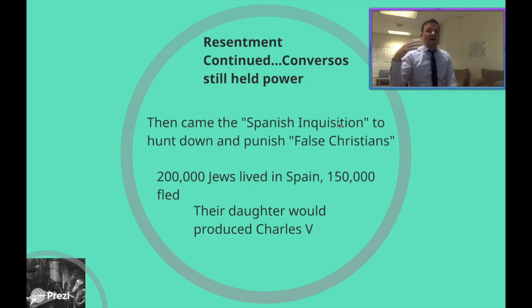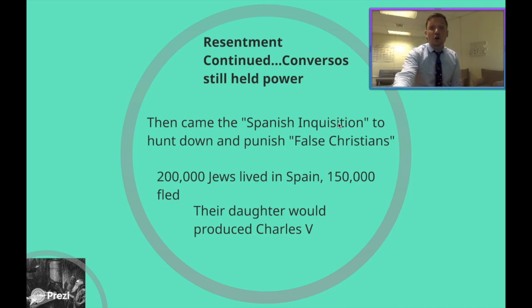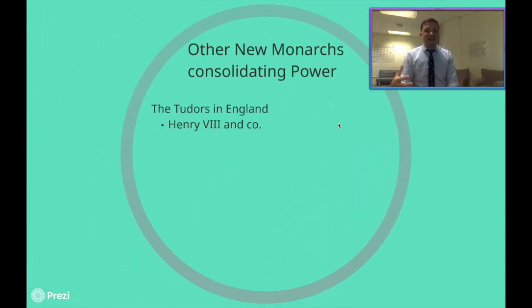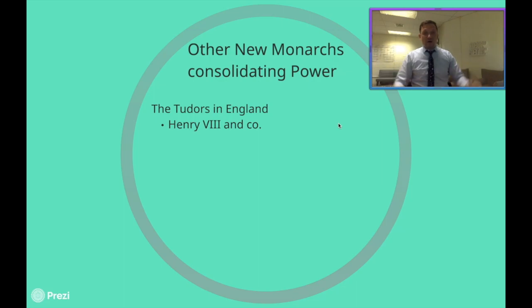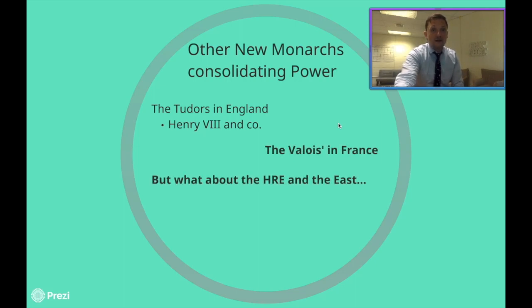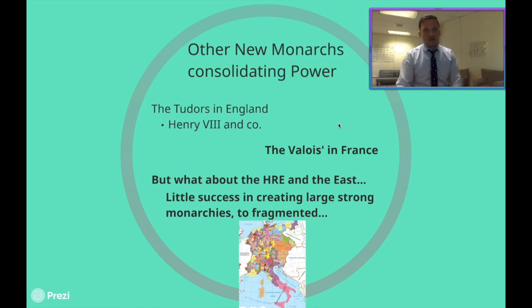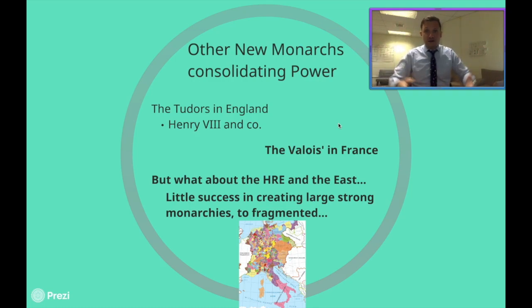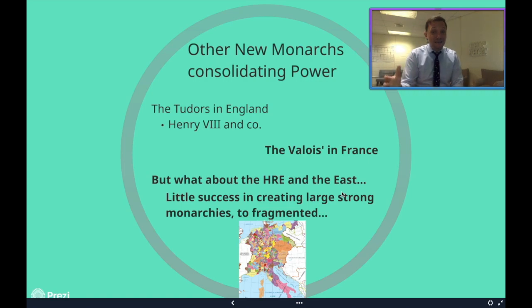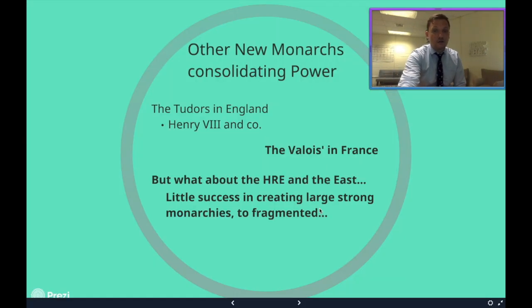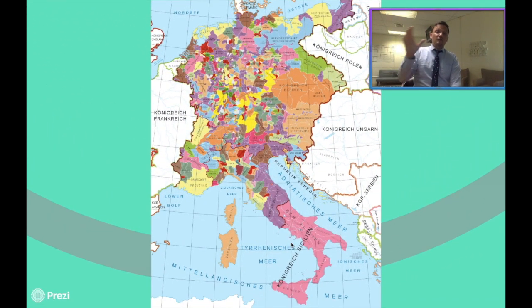Isabella and Ferdinand would later have a daughter who would marry a Habsburg, and that daughter — Joanna — would actually produce a guy named Charles V, which we'll talk about later. The Spanish Inquisition and the Reconquista are just an example of the growing affluence of these new monarchs. There are other new monarchs doing very similar things: the Tudors in England under Henry VIII, and the Valois in France. But it didn't have success everywhere — places like the Holy Roman Empire and the east of Europe didn't have a lot of success growing these massive monarchies, mainly because they were so fragmented.